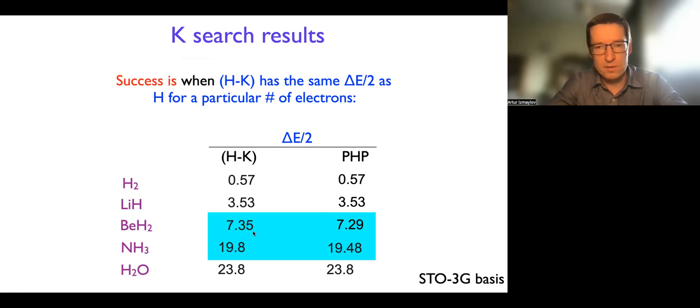And only in the situations with beryllium H2 and ammonia we have slightly bigger spectral ranges for H minus K. But the difference is about a few percent, not more. So we are quite happy with the search that we did for K.